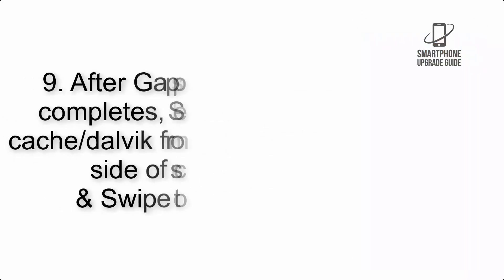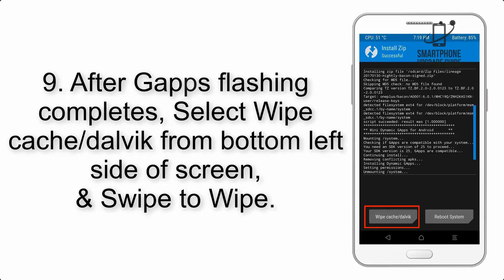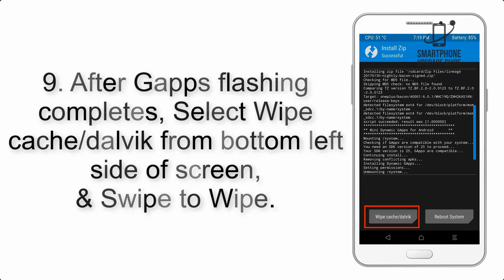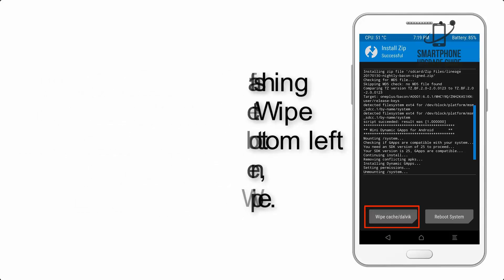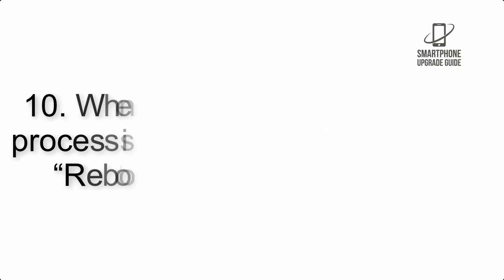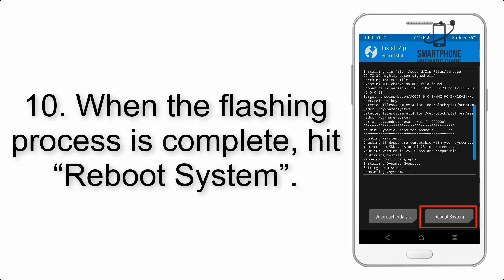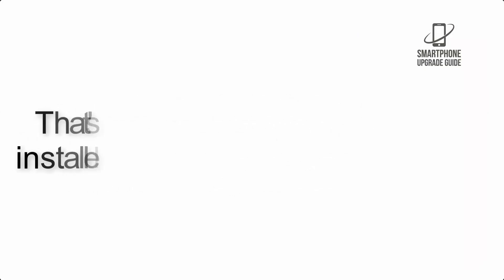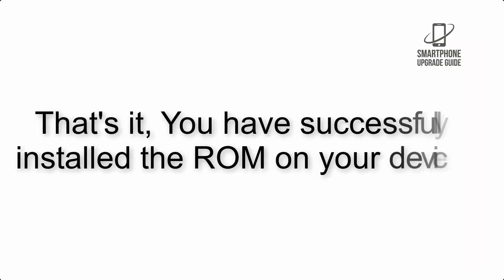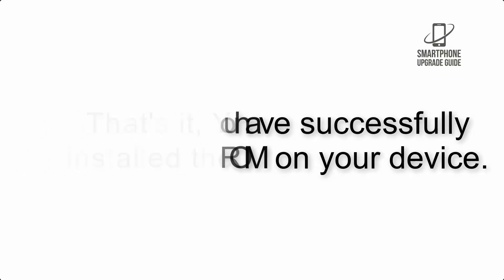Step 8: Flash the GApps zip package in the same manner. Step 9: After GApps flashing completes, select Wipe Cache and Dalvik from the bottom left side of the screen and swipe to wipe. Step 10: When the flashing process is complete, hit Reboot System. That's it — you have successfully installed the ROM on your device.